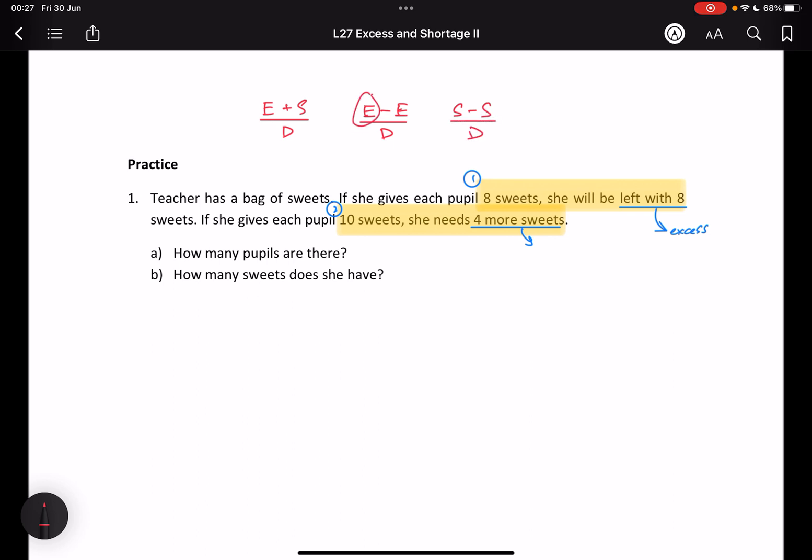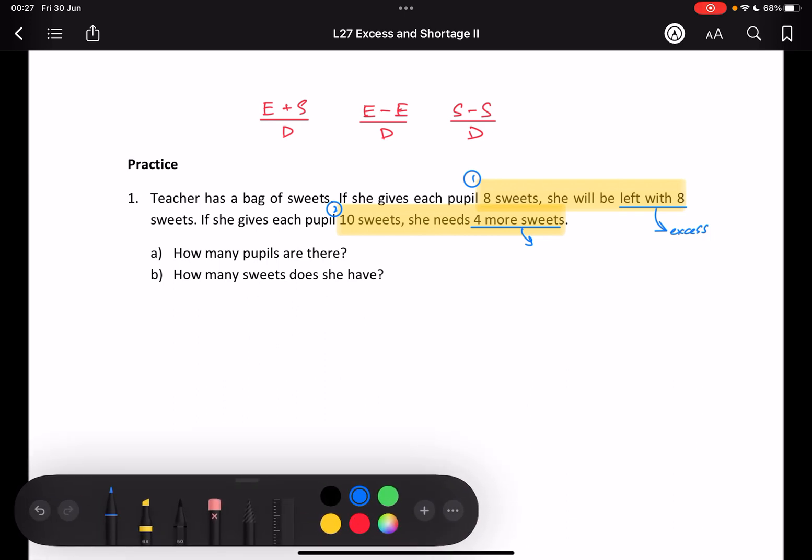Whenever you have the same thing, you have to deduct. You have to subtract. But, whenever you have different things, you add. So, you just need to ask yourself, what is the excess?